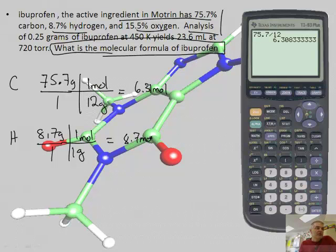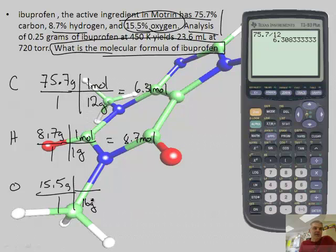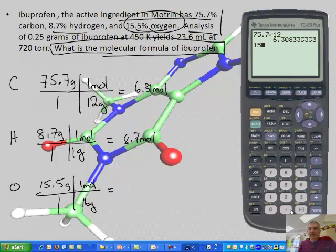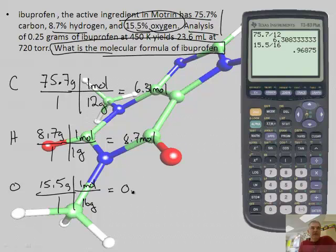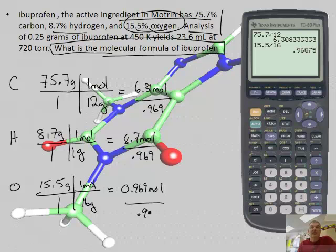And we have some oxygen, so oxygen is 15.5 grams. There's 16 grams in one mole. 15.5 divided by 16 gives me 0.969 moles. Divide everything by the smallest one, which is the oxygen at 0.969.